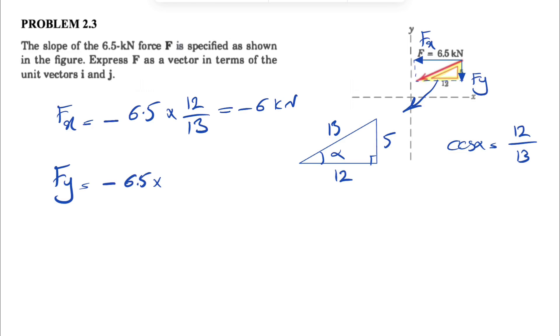So look at this right triangle in here, we're going to have the sine of alpha, which is basically this right triangle. Sine of alpha would be the opposite, which would be 5 over the hypotenuse 13. So 5 over 13. Let's see what we get in here.